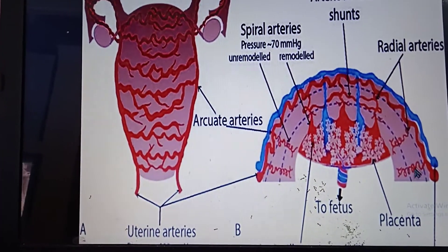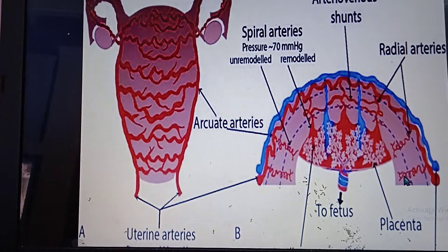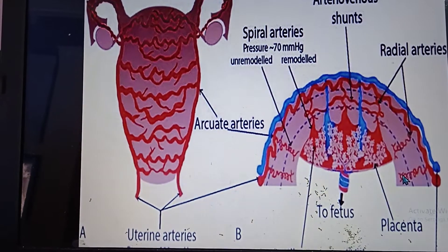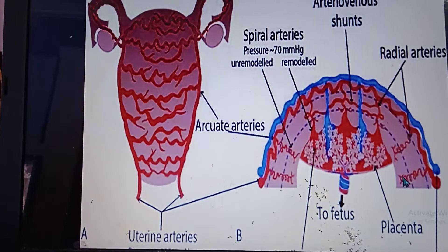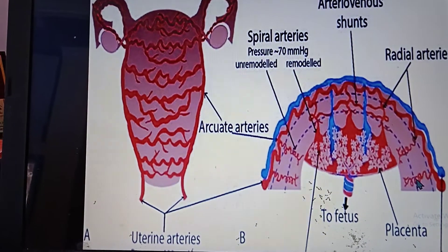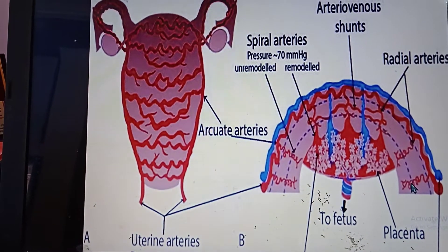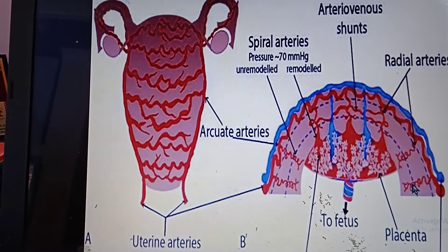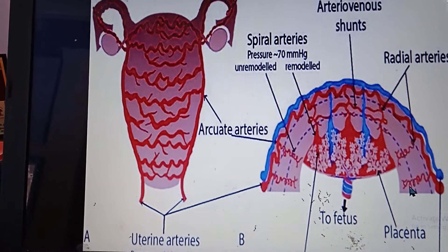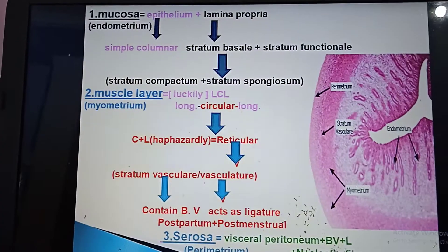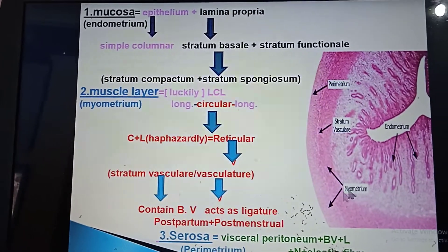The radial artery gives two types of branches: one is the spiral artery, which travels in a spiral form and goes up to the stratum spongiosum, whereas the other is the basal artery, which restricts itself to the stratum basale.